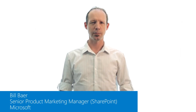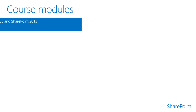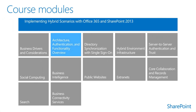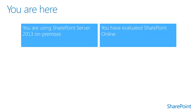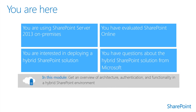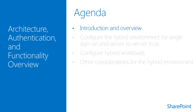Welcome to Implementing Hybrid Scenarios with Office 365 and SharePoint Server 2013. This is Module 2.1: Architecture, Authentication, and Functionality Overview. The content provided in these modules is intended for organizations currently using SharePoint Server 2013 on-premises, who have evaluated the benefits and capabilities of SharePoint Online, and are interested in a hybrid SharePoint solution and would like to learn more about the considerations necessary when planning a hybrid deployment.